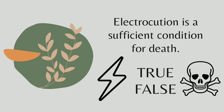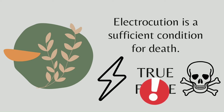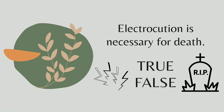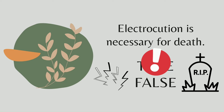Next example: Electrocution is a sufficient condition for death. True or false? It is true — electrocution is indeed enough to cause a person's death. Next statement: Electrocution is a necessary condition for death. Is this true or false? It is false, because it is not required to be electrocuted in order to die. There are many ways a person can die, such as disease or any accident.